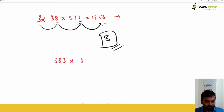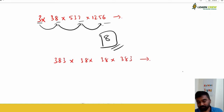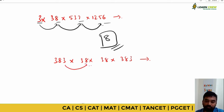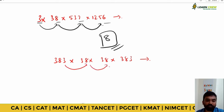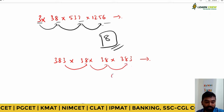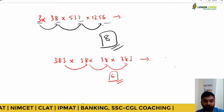For example: 3 × 38 × 383 — what is the unit place? Three into eight is 24, four into eight is 32, three into two is six. So the units place answer is six.